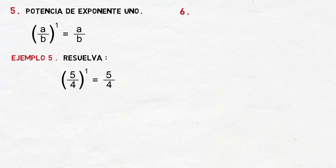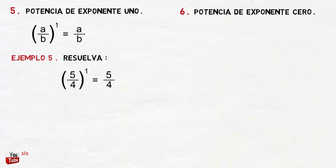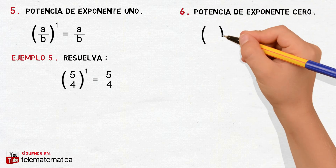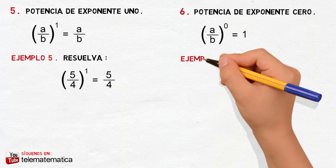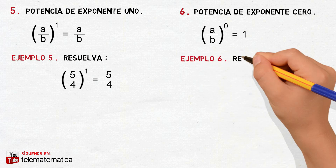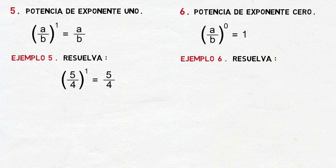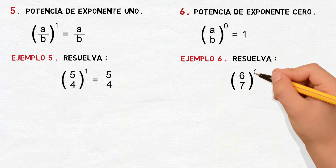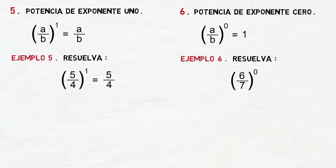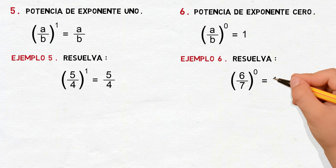Propiedad número 6: potencia de exponente 0. Esta se define como A dividido para B elevado a la 0, y va a ser igual a 1, con A y B distintos de 0. Resuelva: 6 séptimos elevado a la 0. Aplicando la propiedad, esto va a ser igual a 1.